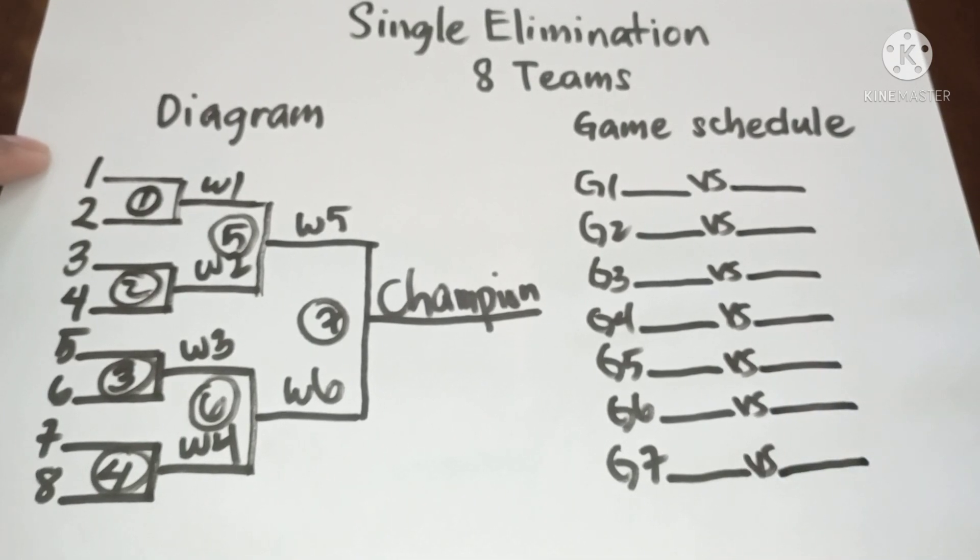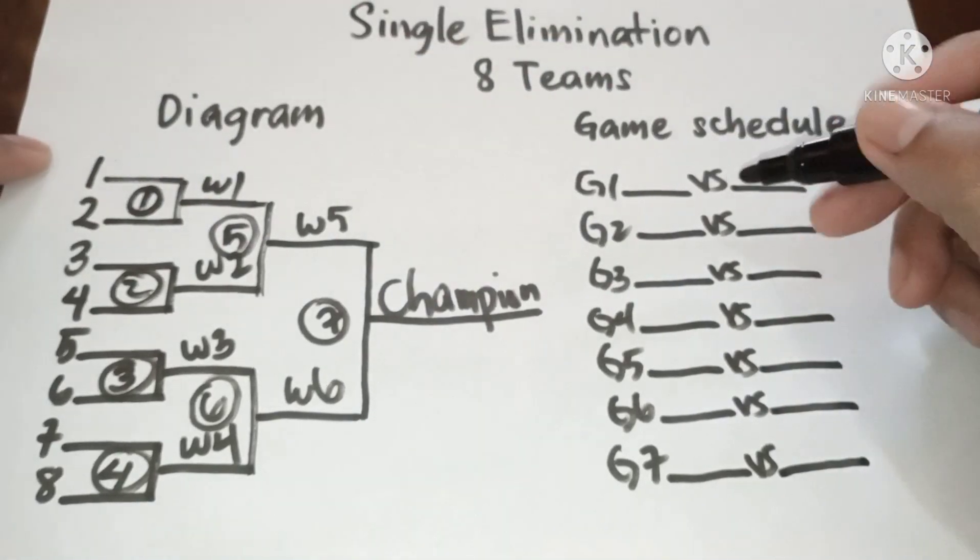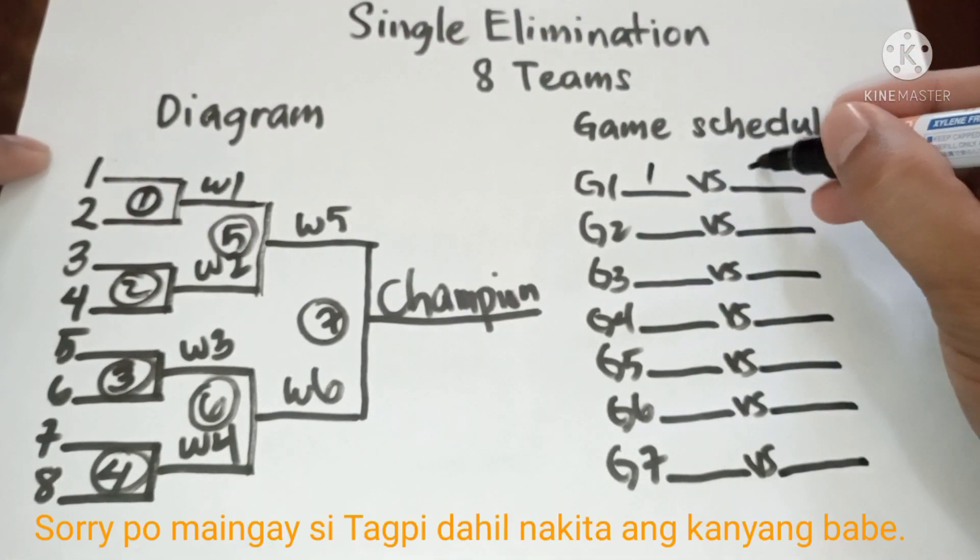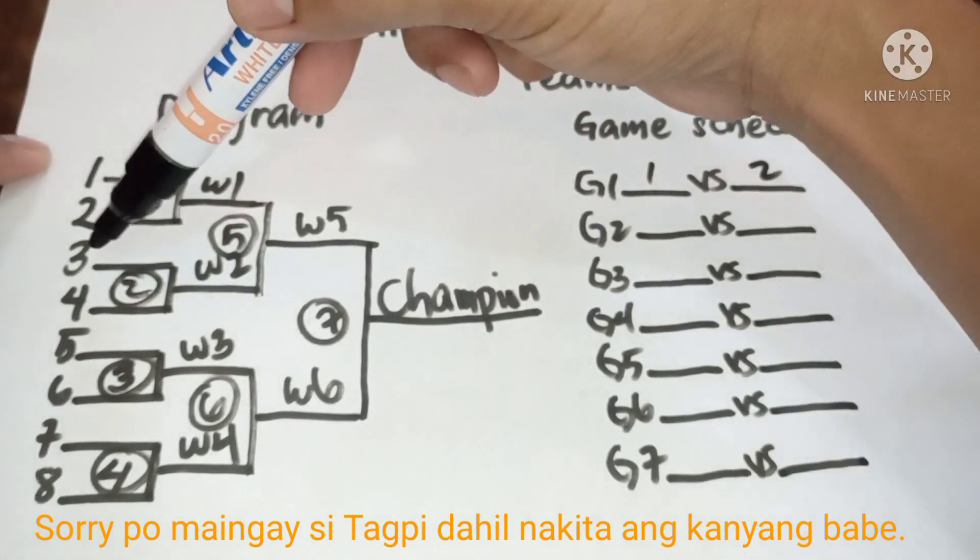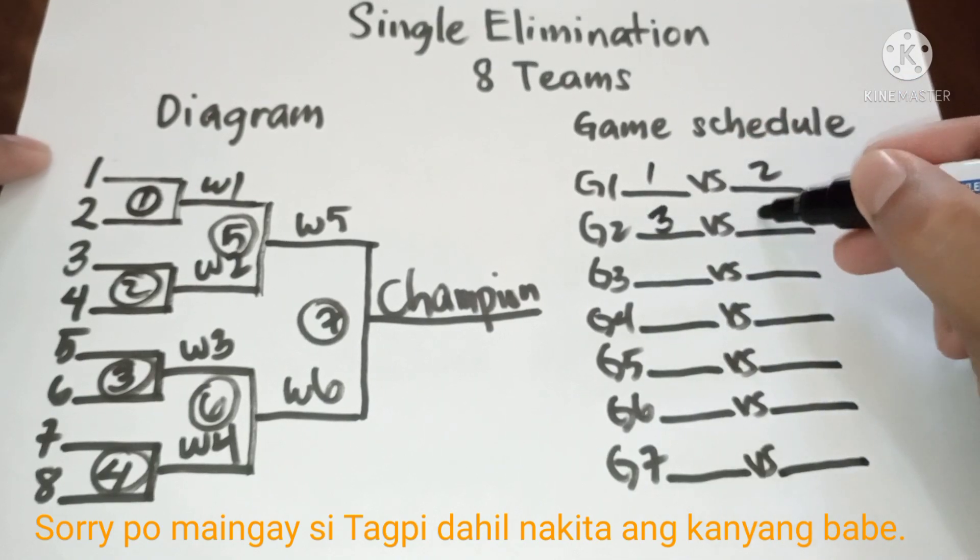Now let's interpret the diagram. In game one, we have one versus two. In game two, we have three versus four.